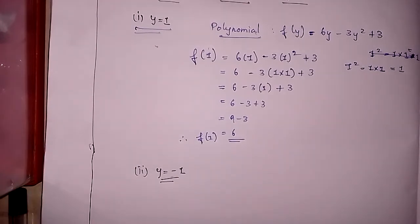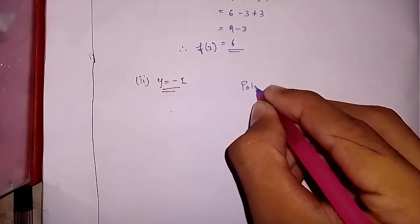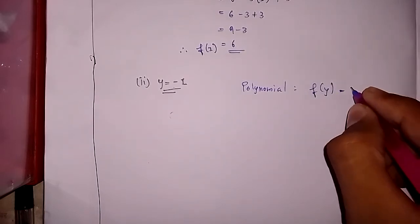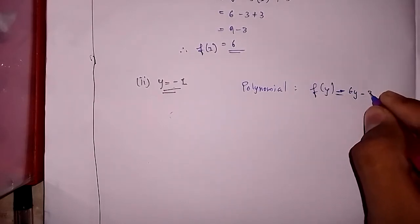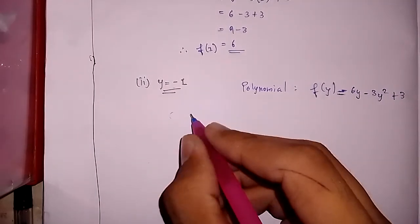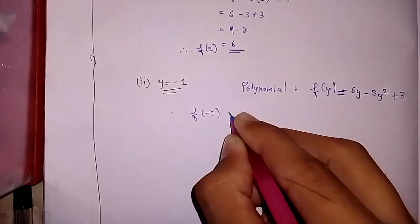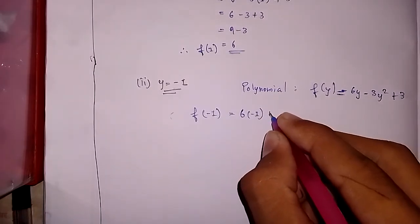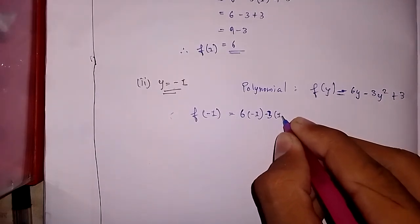The second value is y equal to minus 1. So we apply now the polynomial f(y) is equal to 6y minus 3y squared plus 3. We apply the value minus 1: f(minus 1) is equal to 6 times minus 1 minus 3 times minus 1 squared plus 3.